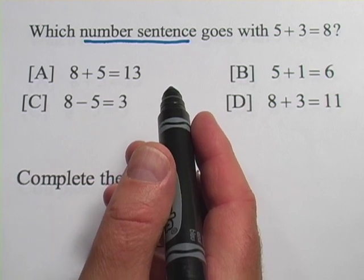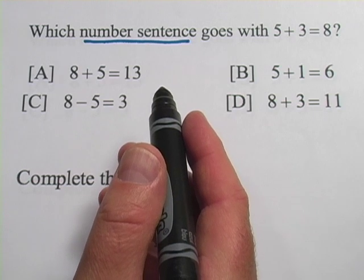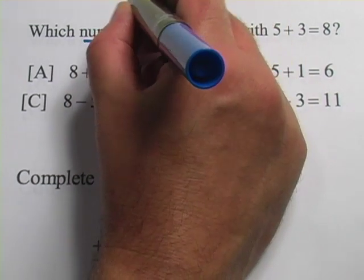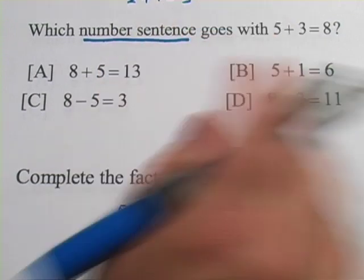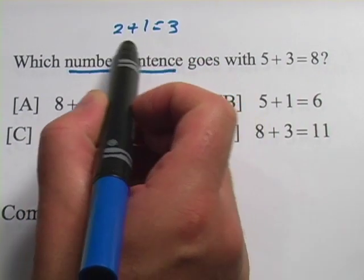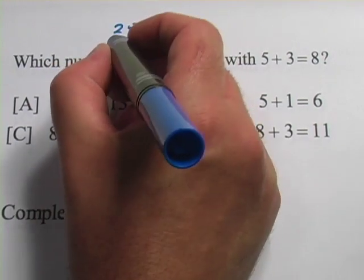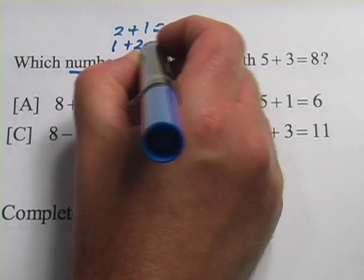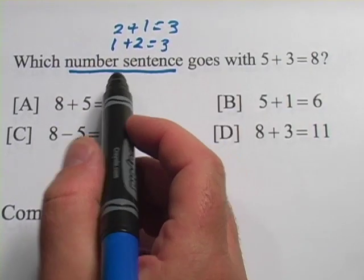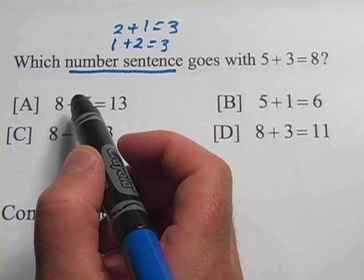And the idea is that these number sentences hang out in groups called fact families. So let's do 2 plus 1 equals 3. There's one number sentence. You could write this in a slightly different way but keep all the numbers the same if you just move the 1 and 2 around. So 1 plus 2 equals 3, that's still correct. And it's part of this family because all the numbers are the same. There's a 1, a 2, and a 3.